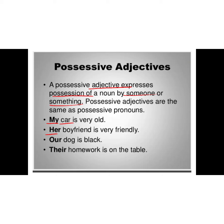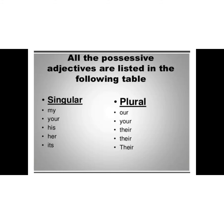Our dog is black. Their homework is on the table. So the words our and their are possessive adjectives. The singular possessive adjectives are: my, your, his, her, its. In plural, they will be: our, your, their, theirs.